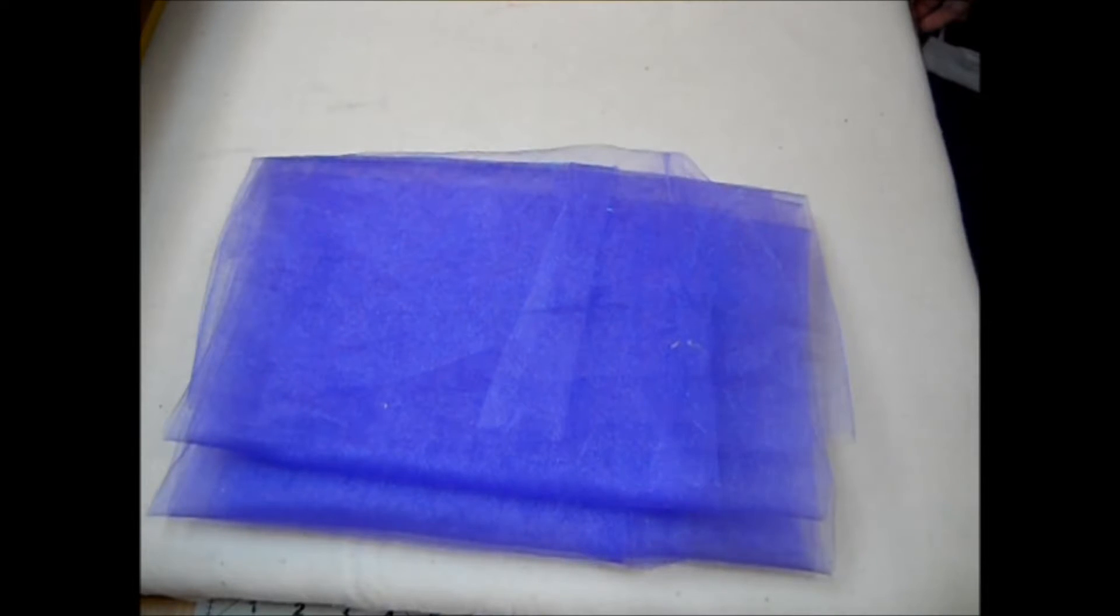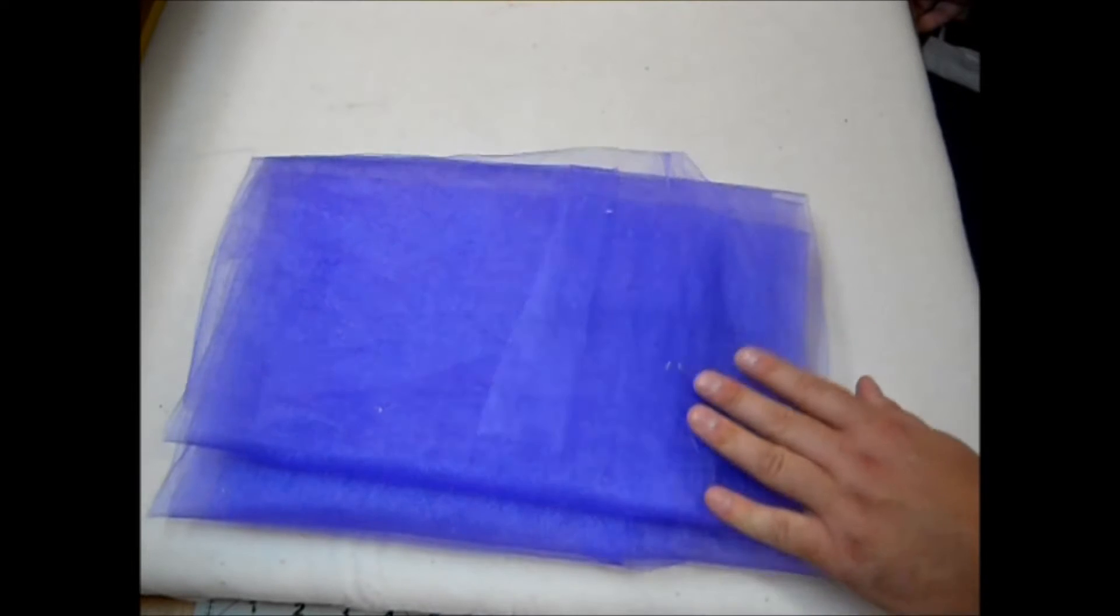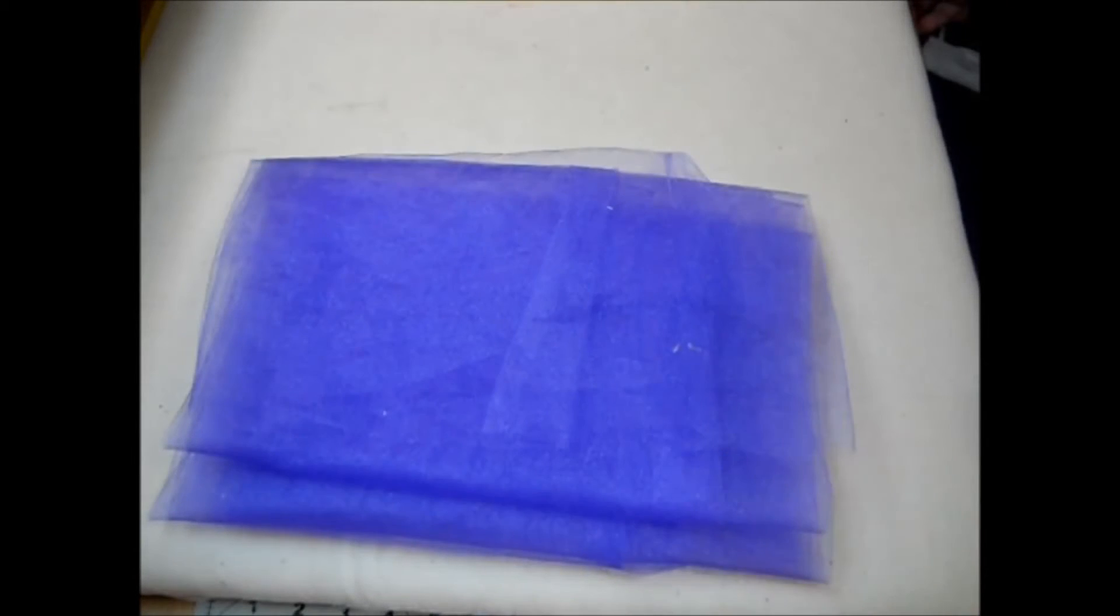I was given a bag of scrap fabric, and it had about six to eight yards of this purple tulle in it, but to make one tutu, you're going to need about two and a quarter to two and a half yards. I've also seen tulle sold on a roll, and it's six inches by 25 yards, so you'll just need one roll of that, or two if you want two different colors in your tutu.